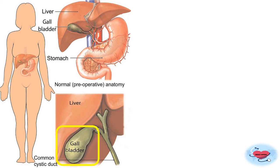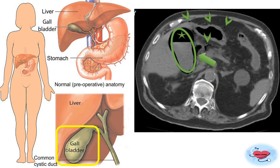Next comes emphysematous cholecystitis — not empyema. Empyema means pus within a cavity, whereas emphysema means gas within the gallbladder. This is a result of life-threatening septicemia, seen in diabetic and immunosuppressed individuals, and leads to gangrene, perforation, and peritonitis — so emergency cholecystectomy is needed. It is caused by Clostridium welchii infection and is seen in elderly male patients. In this picture you can see gas within the gallbladder — this is the radiological appearance. The arrows indicate gas within the gallbladder wall and free gas.